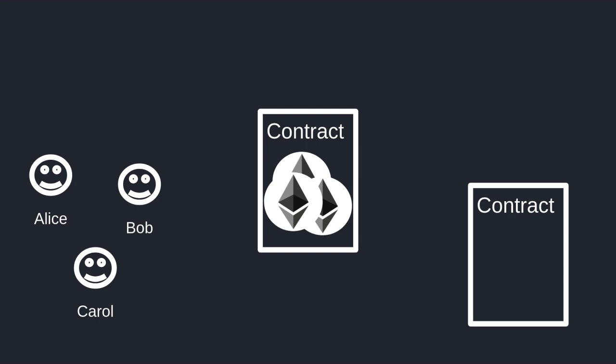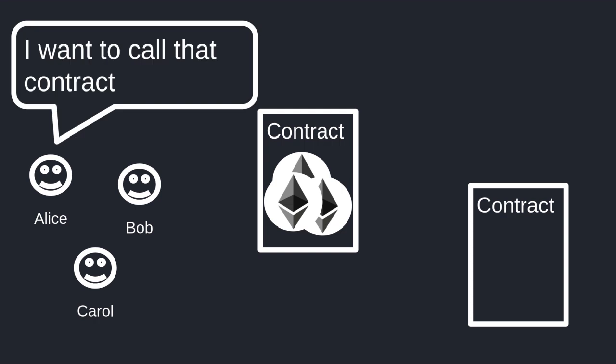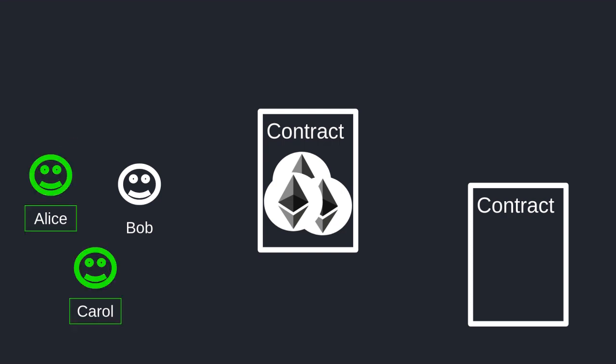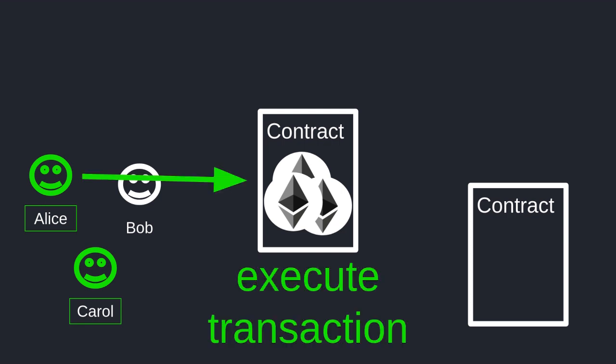Now since this is a smart contract, our multisig wallet will be able to do more than just send ether and be able to call other smart contracts from the multisig wallet. For example, Alice says I want to call that contract and Alice gets the approval of Carol. Alice executes the transaction on the multisig wallet and the multisig wallet calls the contract.